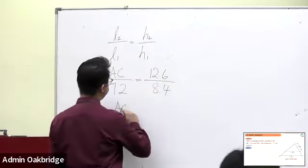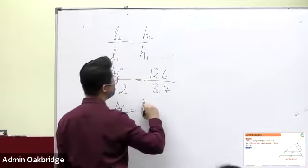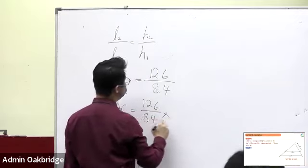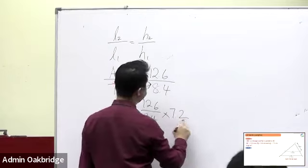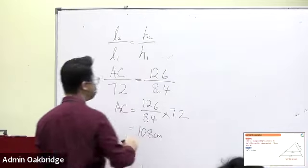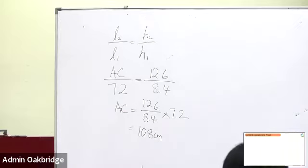Then AC — how to find AC? It's very easy. Just take this fraction: 12.6 over 8.4 times 7.2, then you can get the final answer. So this is a simple question, only between the length. So let's look at this one: similarity between length and areas.